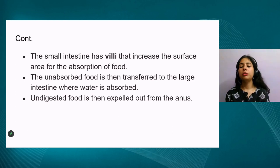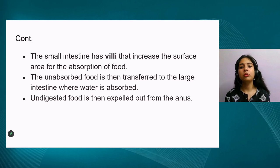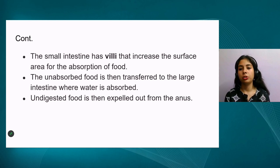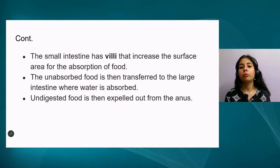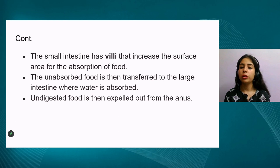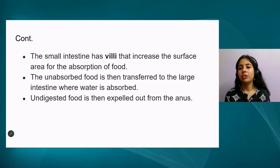After absorption in the small intestine, unabsorbed food passes to the large intestine. In the large intestine, reabsorption of some salts and water occurs so that nothing useful is wasted. Only the undigested food that is not useful to our body is expelled through the anus — this process is known as excretion. This completes the process of digestion from mouth to anus.